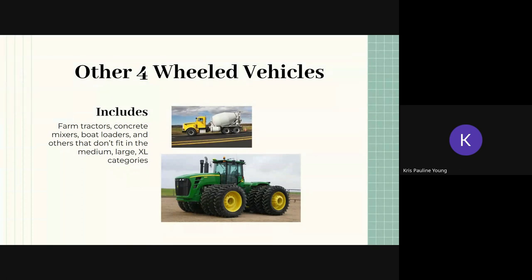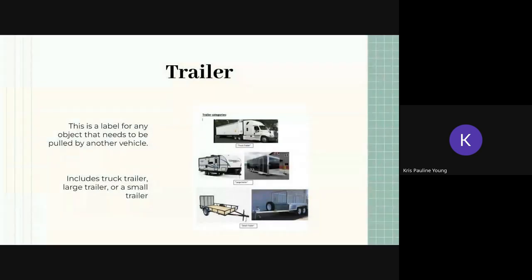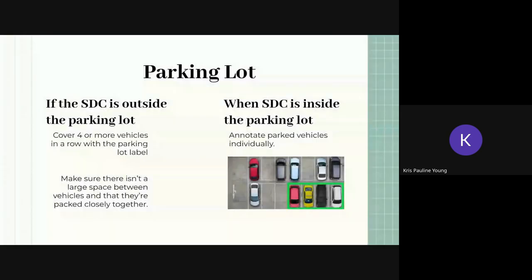Other four-wheeled vehicles is another label on GOAT for vehicles that don't fall under the first three sizing labels. We can have farm tractors, concrete mixers, or boat loaders here. If you're unsure what the exact label is, then it may well be another four-wheeled vehicle. More examples of a trailer here and a parking lot.